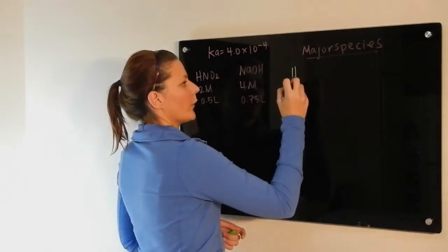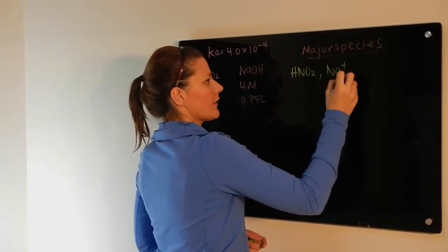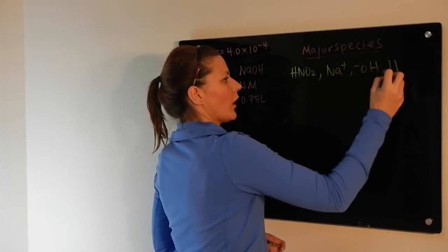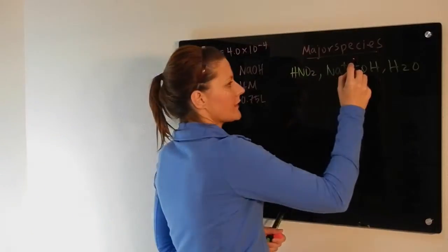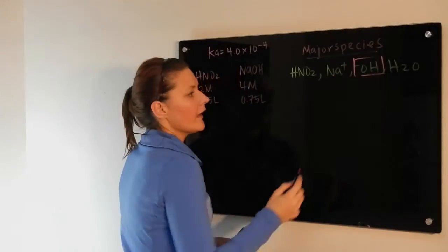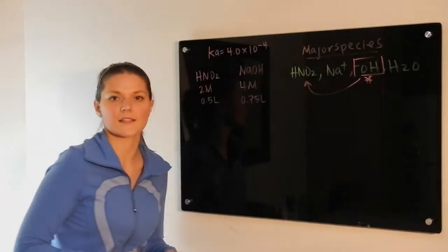So we have our weak acid, which stays together, we've got our strong base that breaks up, and we've got water. As always, you're going to look for the strong substance, in this case it is still hydroxide, and it's going to have priority, and it's going to react with the best acid in solution.